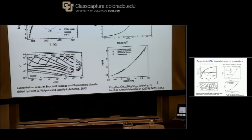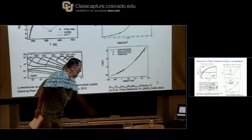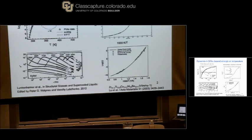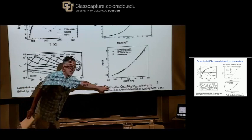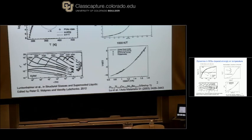Tris-naphthylbenzene and xylitol. Xylitol is a five-carbon chain in which every carbon has an OH group on it, so it's an extensively hydrogen-bonded system. And this is a metallic glass — Vitreloy is a commercial product. You can see from the composition that it's a five-component metallic glass. It's important that those five components are there and that they're there in those proportions.